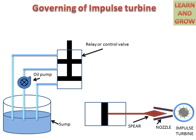The sump is connected with the relay or control valve with the help of pipes. There are three pipes: the upper pipe is connected to the upper part of the piston, the middle pipe is connected to the middle of the control valve, and the lower pipe is connected at the lower end of the control valve. This is further connected to the spear cylinder, in which oil will circulate according to the movement of the spear.